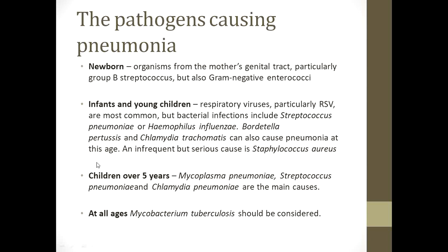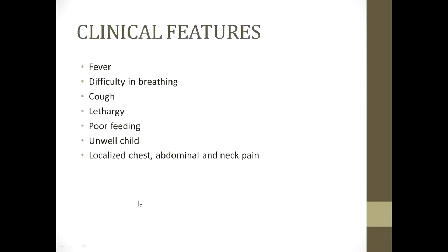Atypical bacteria like Bordetella pertussis and Chlamydia trachomatis can also cause pneumonia in infants and young children, along with Staph aureus. In children over five years of age, Mycoplasma pneumoniae, Streptococcus pneumoniae, and Chlamydia pneumoniae are the main causes. In all age groups, Mycobacterium tuberculosis should always be considered.